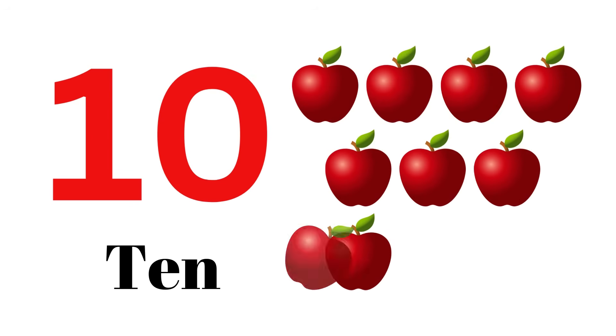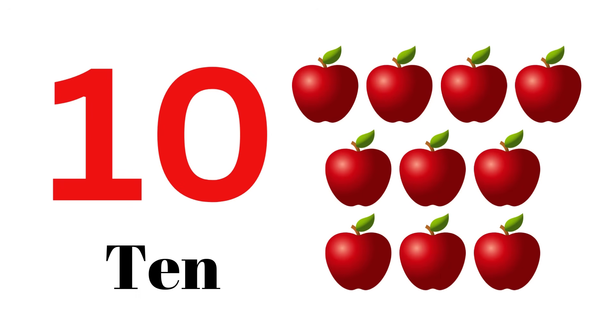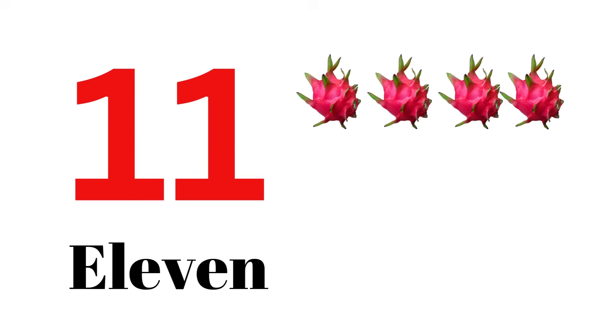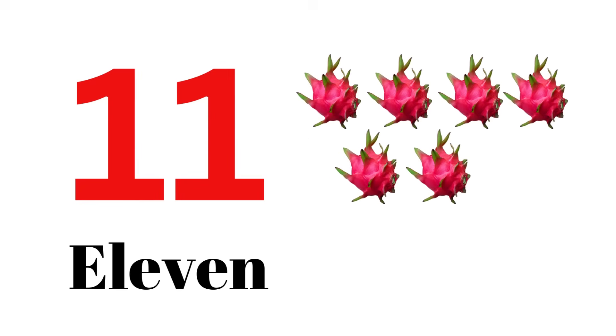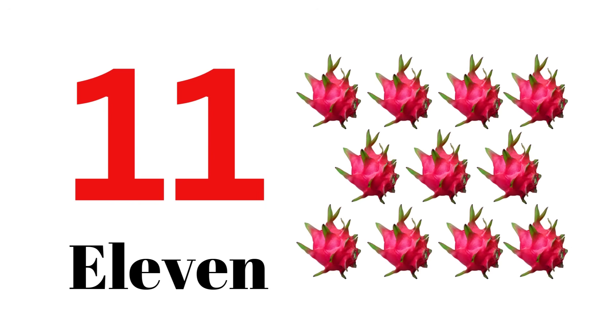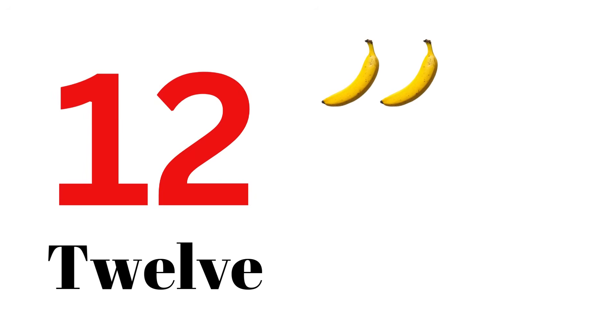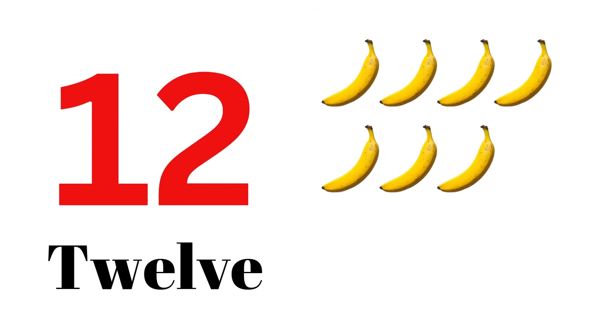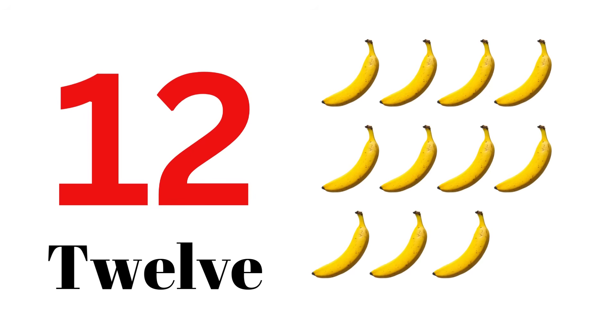Ten: one, two, three, four, five, six, seven, eight, nine, ten — apple. Eleven: one, two, three, four, five, six, seven, eight, nine, ten, eleven — dragon fruit. Twelve: one, two, three, four, five, six, seven, eight, nine, ten, eleven, twelve — banana.